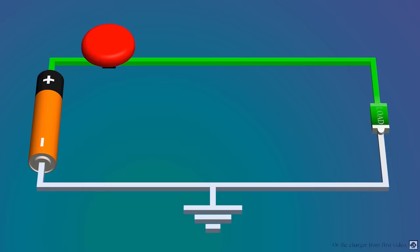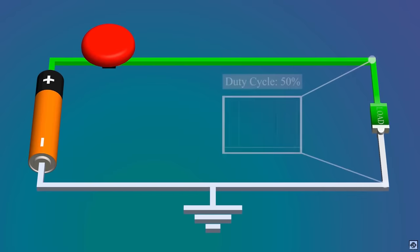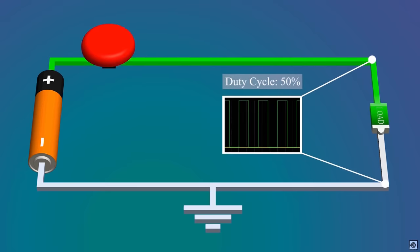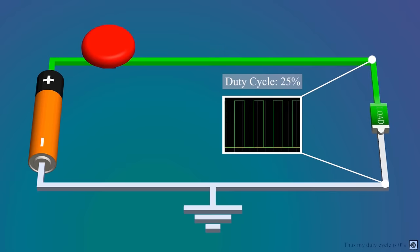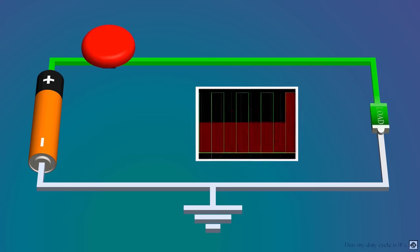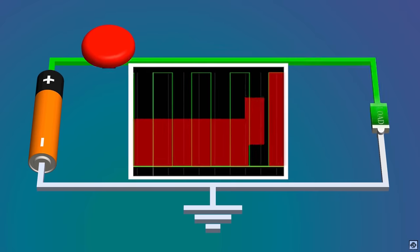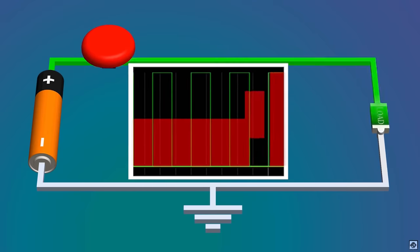If you have a DC source and a switch that is turned on and off periodically, you get a PWM signal. The amount of time a digital signal is in the active state relative to the period of the signal is called its duty cycle. If the switch is on for a long duration the duty cycle increases, and if it's on for a short duration the duty cycle decreases. If you calculate the average voltage of a cycle with a 50% duty cycle, it's half of the input voltage.